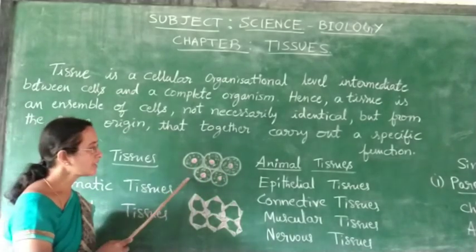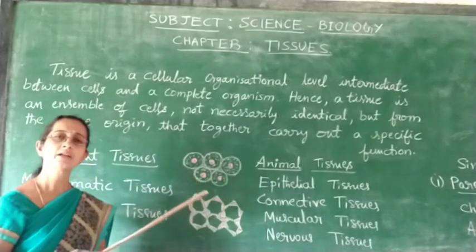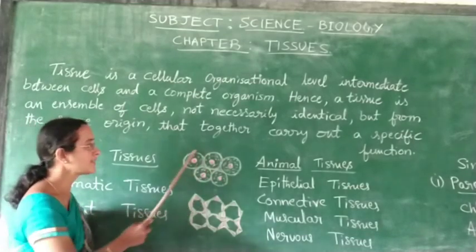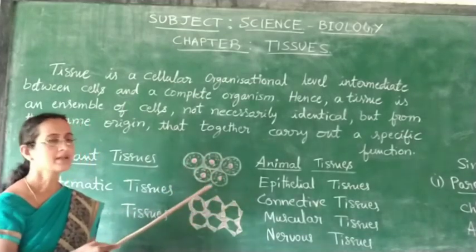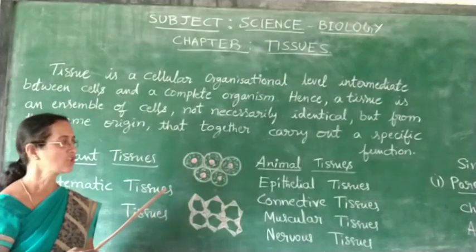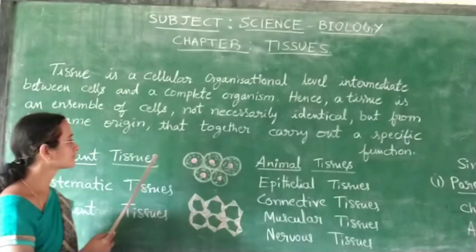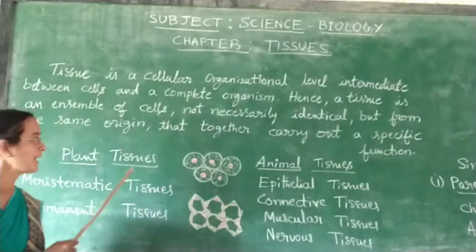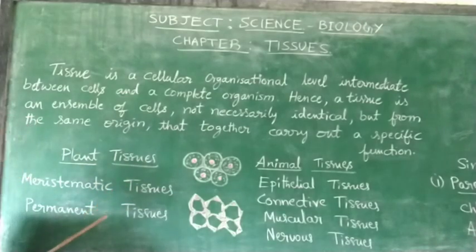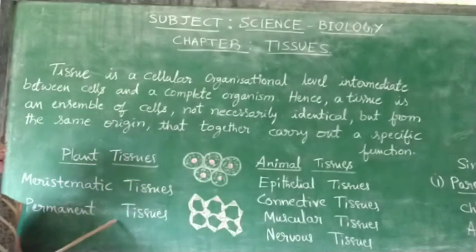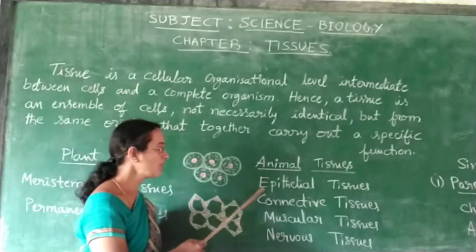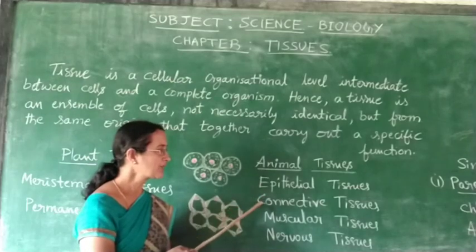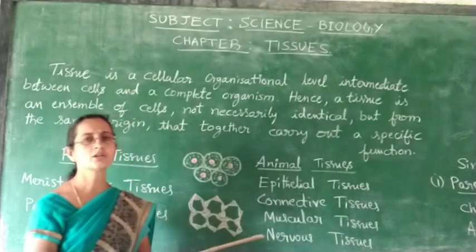You are seeing cells of the same structure, but that may not always be true — you may find some dissimilar cells also, for example in the complex plant tissues. Tissues are of two types: plant tissues and animal tissues. In animal tissues you are learning four different types: epithelial tissues, connective tissues, muscular tissues, and nervous tissues.